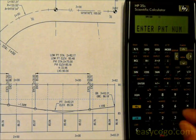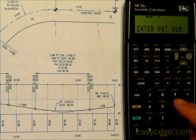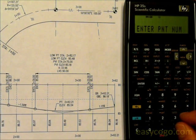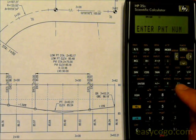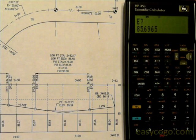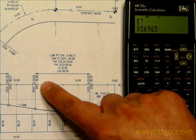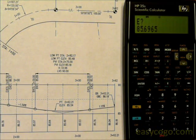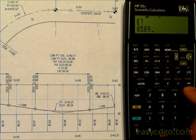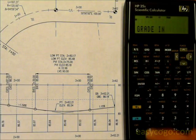Beginning elevation: we can enter a point number if we had one stored before that had the elevation we needed, or we can just skip that option and enter the elevation, 8589, press RS.